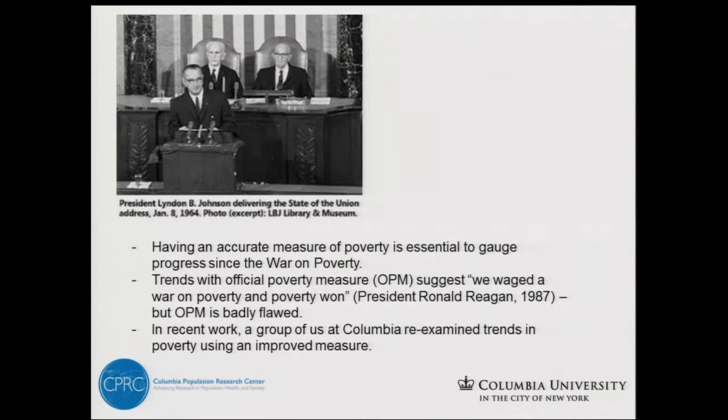One of the limitations of the SPM is that it's only been available since 2009 with all the questions that you need to compute it in the CPS, and when you start going before 2009 you start to lose elements of the SPM that you would need to calculate the full measure. The first one you lose in 2008 would be the move, the child care expenses. So we thought that an improved measure of poverty would be helpful to analyze long-term trends, especially trends in anti-poverty policy since the war on poverty, since every year you get a version of the quote that we fought a war on poverty and poverty won. That's why we wanted to take it back to the 1960s.